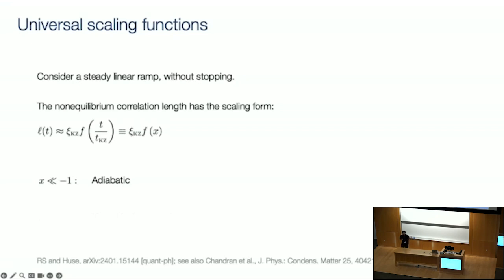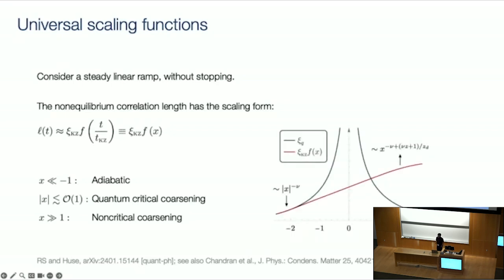So there are three regimes that we can consider for the scaling variable. One, when X is much smaller than minus one, that's the adiabatic regime. Then I have a regime of quantum critical coarsening, and then I have a regime of non-critical coarsening. So what does the scaling function actually look like? It's very simple. So when I'm in the adiabatic regime, it just has to follow the equilibrium correlation length. When I'm in the quantum critical regime, what happens is that my system, even though I'm near criticality, my system is heated up. So there's really nothing singular. So the correlation length evolves smoothly without any singularities. And finally, the interesting thing is that at late times, I cross over to a regime with a growth that's much slower than what I would have on the left. So there's much rich physics that you can uncover.